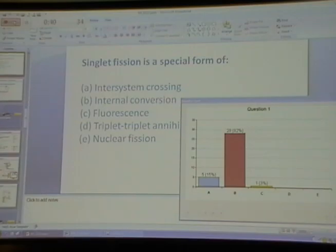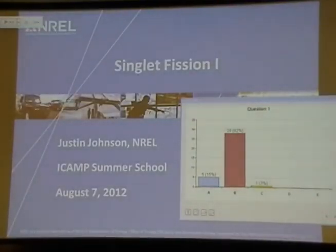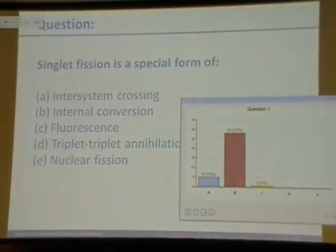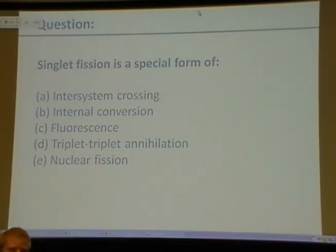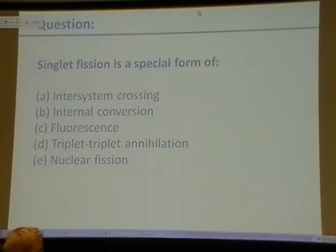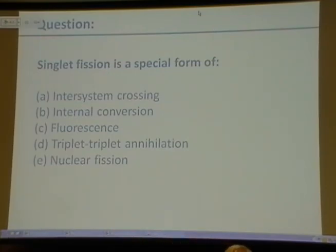The answer to the clicker question — singlet fission is a special form of internal conversion — is correct. The reason is that you are going from a singlet to a singlet. That by definition is internal conversion. It's a special form because it's not a true singlet; it's two triplets that are coupled and whose overall spin is a singlet. Over time, things like inter-system crossing can cause those two triplets to become independent triplets, singlets, or any spin state — so there are secondary processes that aren't necessarily internal conversion — but that first process is internal conversion.